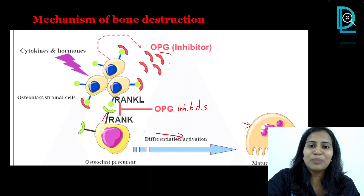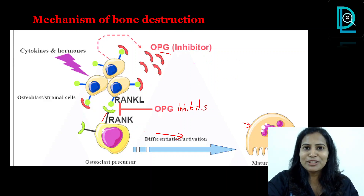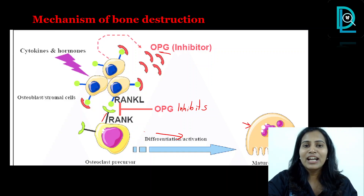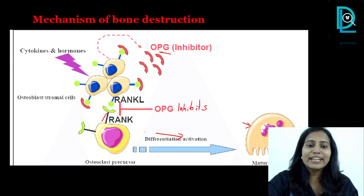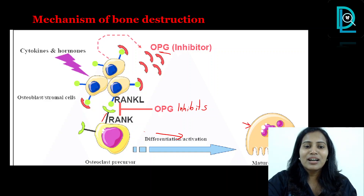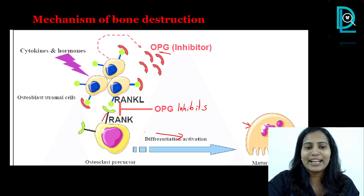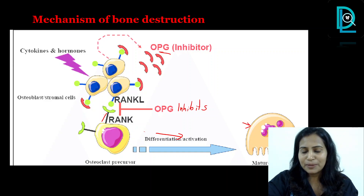OPG is expressed by anti-inflammatory cytokines. However, during times of periodontal destruction, you have a higher amount of pro-inflammatory cytokines, which upregulate the expression of RANK-L, thereby leading to bone destruction.